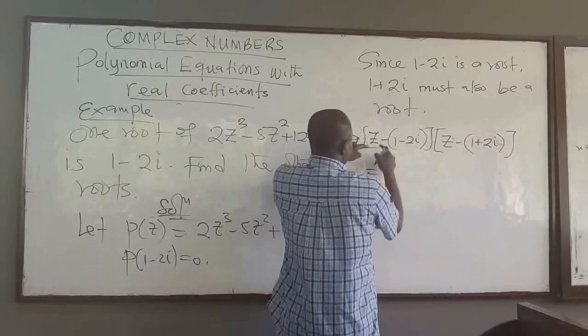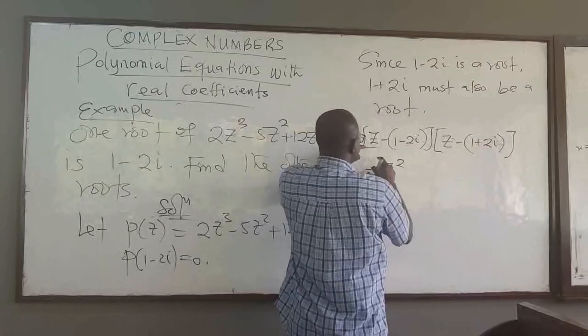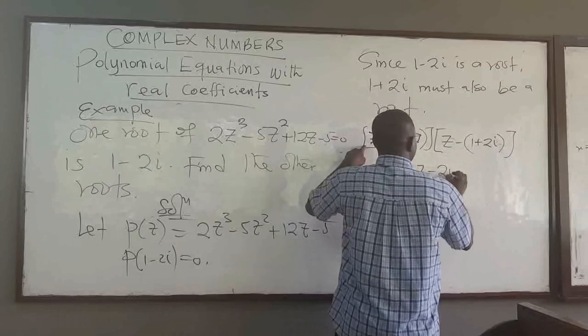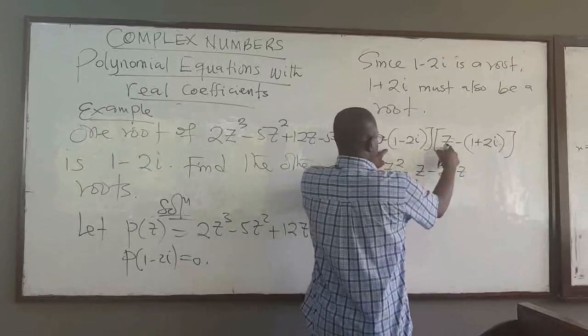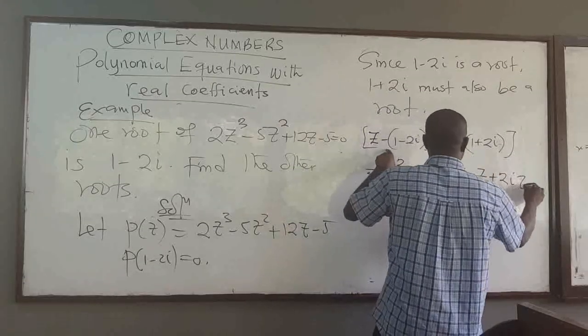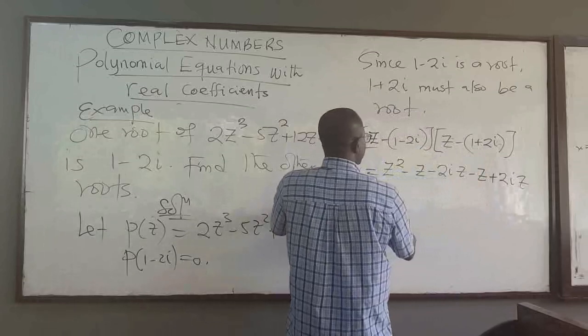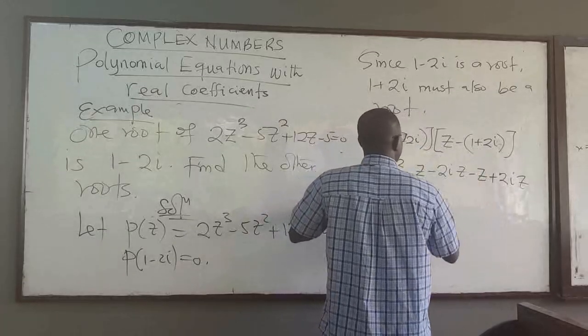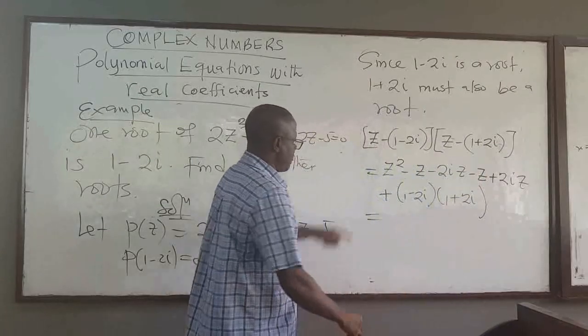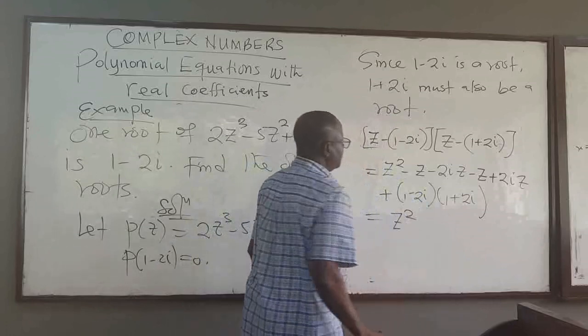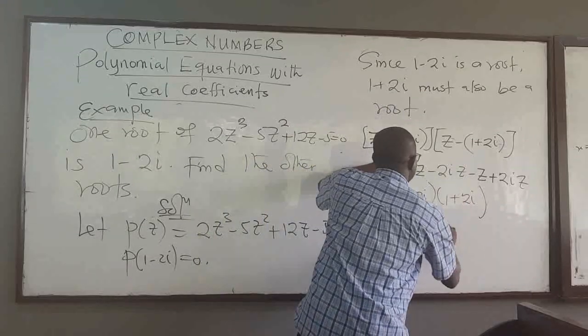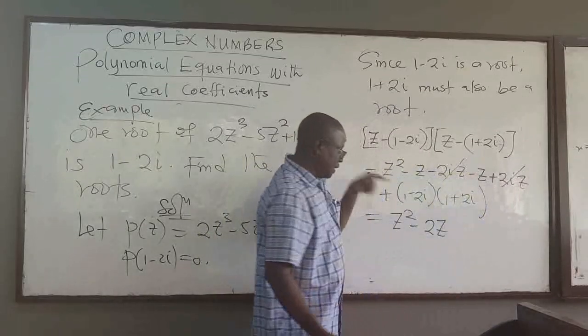If I multiply them, I will have z squared. I have negative z minus 2i, I have negative z minus 2i, minus z plus 2i z. This and that give me plus, I have 1 minus 2i, 1 plus 2i. What does this give me? I'm going to have z squared. I have minus 2z, this cancels out that. Then we can expand this.